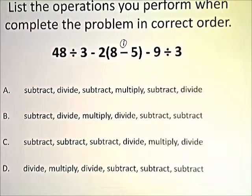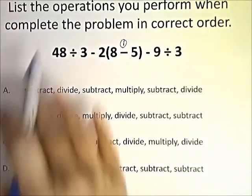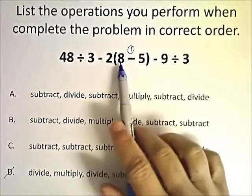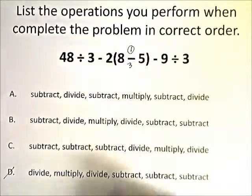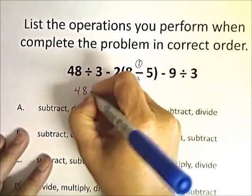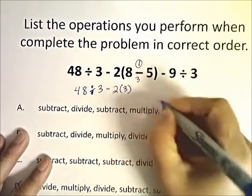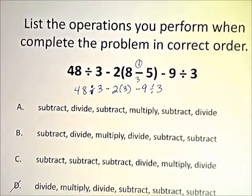We're going to work that subtraction problem. You'll notice that you have subtract, subtract, subtract on all of these problems as the first step. So we know that D cannot be our correct answer because we're not going to divide first in this case. So now if we actually complete this step of 8 subtract 5, we would get a 3 here. So then our problem would look like: 48 divided by 3 minus 2 times 3 minus 9 divided by 3. So we've done step 1. What would the next step be?